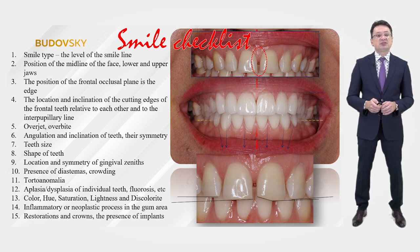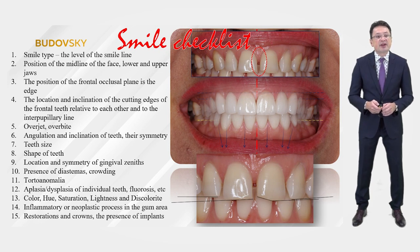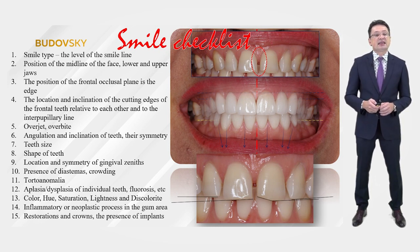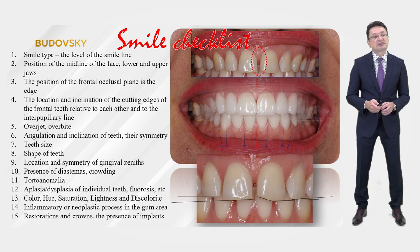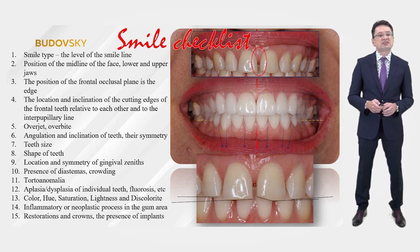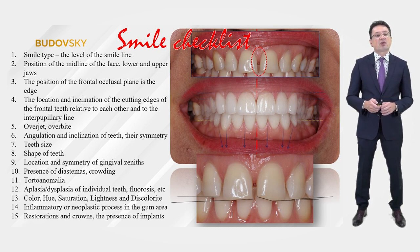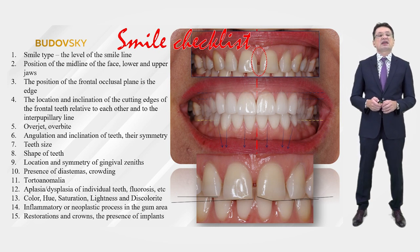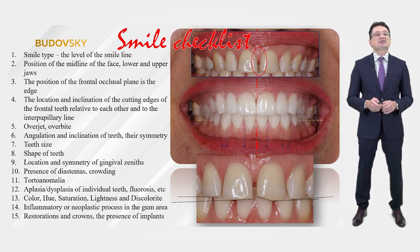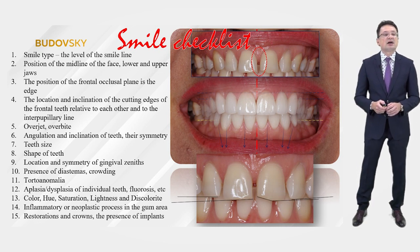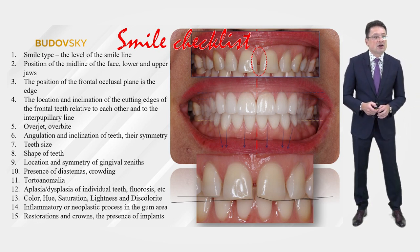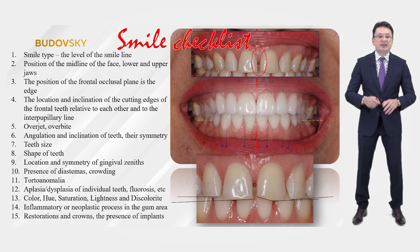Also in the checklist: teeth size, shape of teeth, location and symmetry of gingival zenith, presence of diastemas and crowding, torque anomalies, aplasia, dysplasia of individual teeth, fluorosis, etc. Color: hue, saturation, lightness, and discoloration. Inflammatory or neoplastic process in the gum area, and existing restorations — crowns, implants, fillings, and so on.